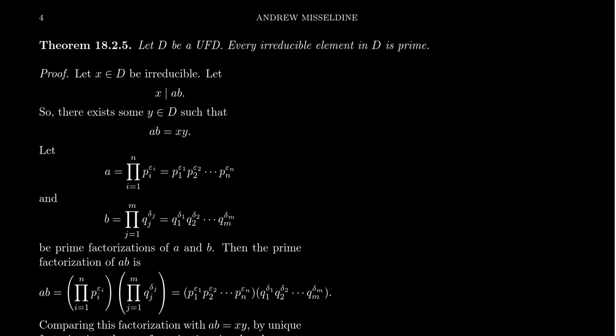So suppose x divides a product A times B. Well, since x divides AB, that means there exists some element y inside the domain so that AB equals xy. This is where unique factorizations come into play here because we have two different factorizations of the same number. So let's look at those factorizations.